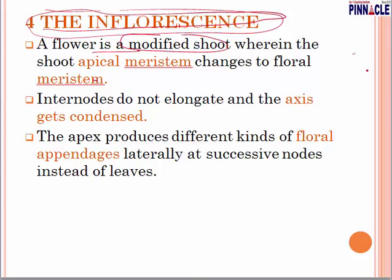The shoot apical meristem — apical means the top part, meristem means growing tissue — changes to a floral meristem. The internode does not elongate and the axis gets condensed in that sense.